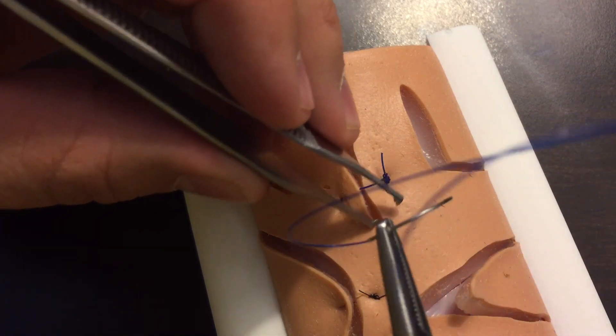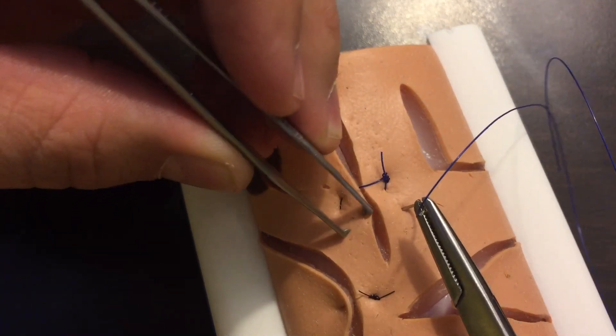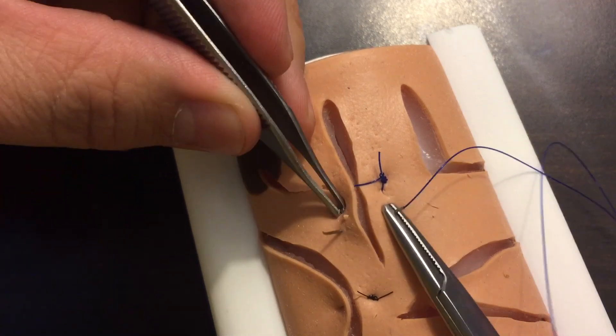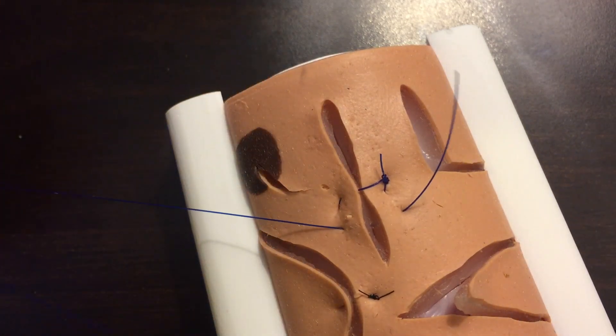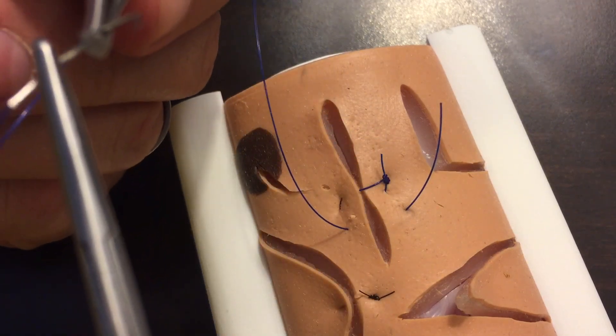I'll demonstrate again here. Entering at 90 degrees, coming across and exiting here. Then we're going to load our needle again backhanded.